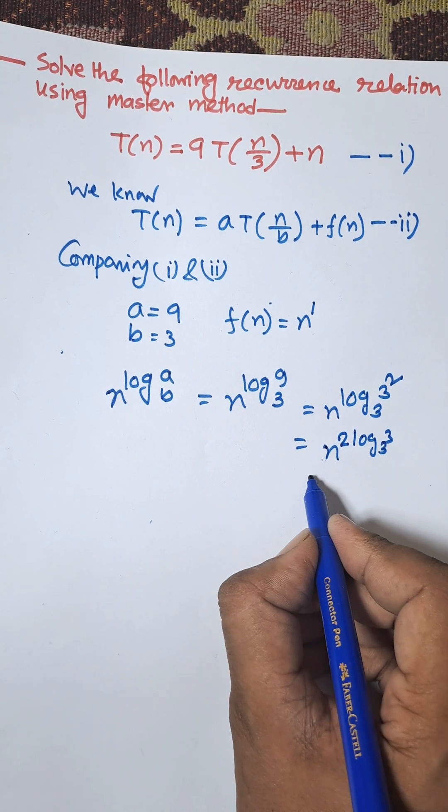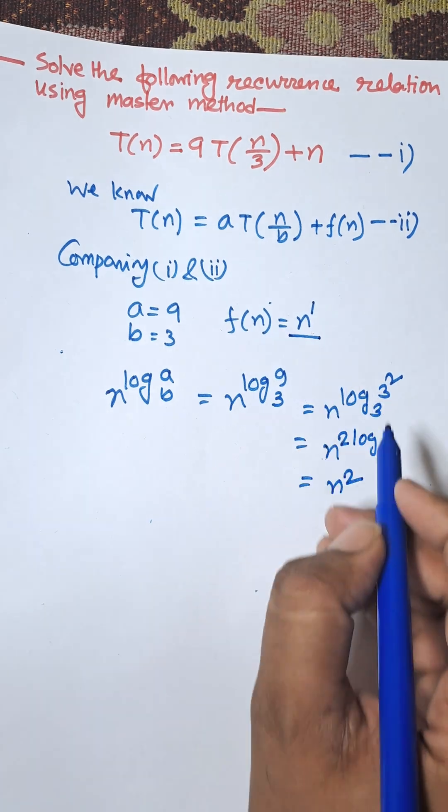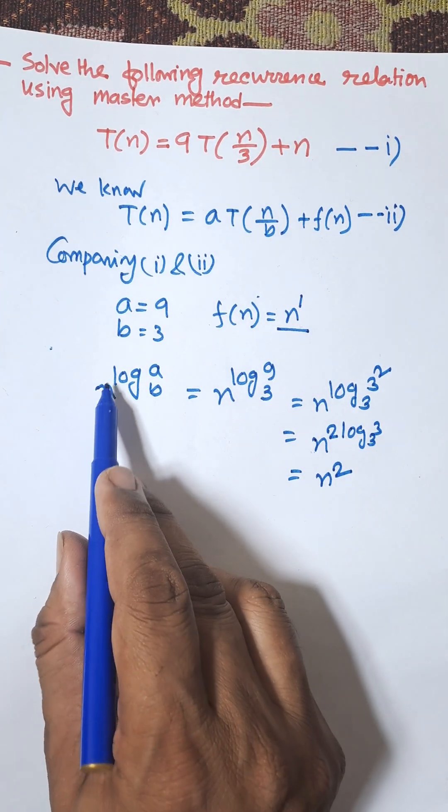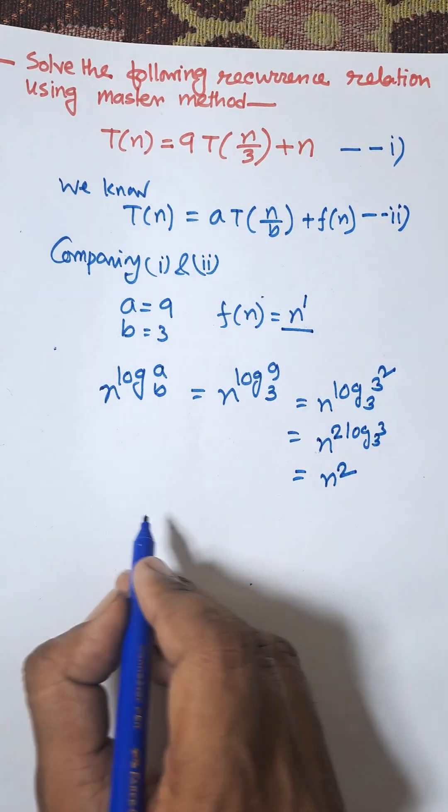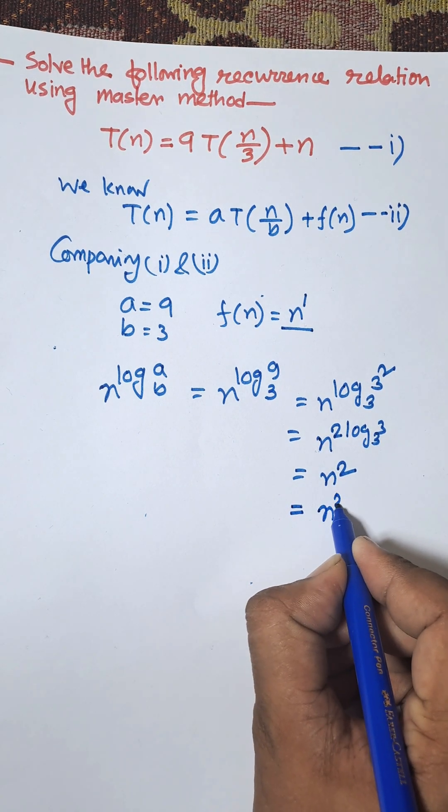Here f(n) equal to n and we get n to the power log base b of a is n squared. So we need to subtract the power of n, squared minus 1.